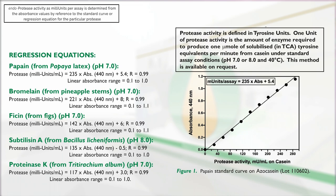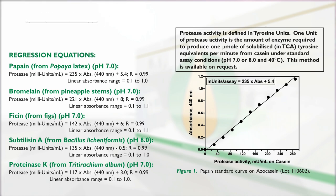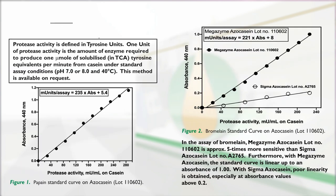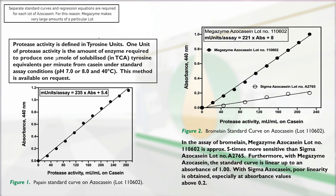Endoprotease activity as milliunits per assay is determined from the absorbance values by reference to the standard curve or regression equation for the particular protease. These curves and regression equations for a range of endoproteases are supplied in the data booklet. Separate standard curves and regression equations are required for each lot of azo casein. For this reason, Megazyme makes very large amounts of a particular lot.